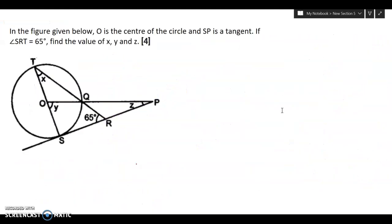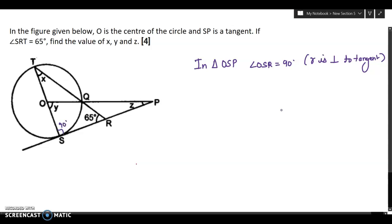Now this question is based on circle and its theorems. Please revise all the theorems. They are going to be very helpful. And you should practice a lot of questions from this chapter. Now in this case, in triangle OSP, angle OSR is equal to 90 degrees. What is the reason? The radius is perpendicular to tangent. This is the radius and this is the tangent. So this will be 90 degrees.